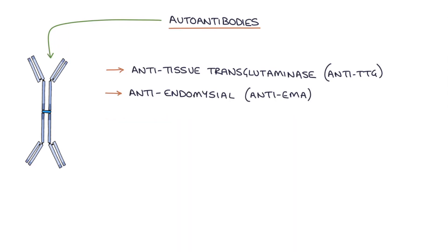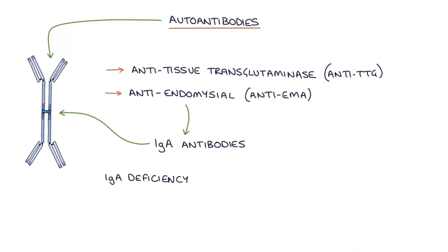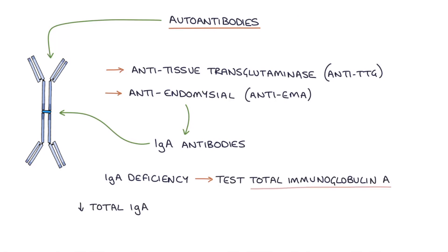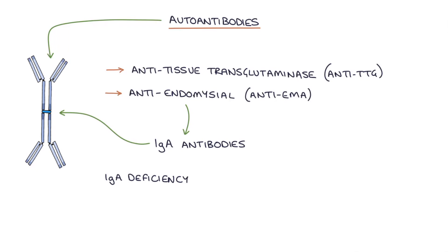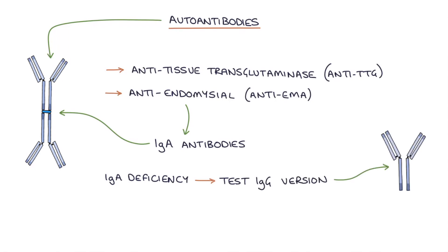A quick Tom tip: anti-TTG and anti-EMA antibodies are IgA antibodies. Some patients have an IgA deficiency, so when you test for these antibodies it's also important to test for total immunoglobulin A. If the total IgA is low, you'll have a low level of anti-TTG and anti-EMA even when the patient has celiac disease, potentially giving a false negative. If IgA levels are low, you can test the IgG version of anti-TTG and anti-EMA, or simply do an endoscopy with biopsies to confirm the result.